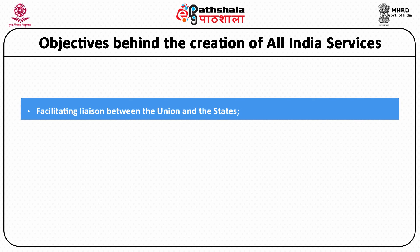Now we are going to discuss the objectives behind the creation of All India Services. As discussed, the officers of All India Services serve both the Union and the State Government. The government wanted a class of officers acting as a link between the Union Government and the State Government. So the very first objective behind the creation of All India Services is to have liaison between the Union Government and the State Government. They act as a coordinating link by putting forward the views of the State Government to the Union Government and vice versa.